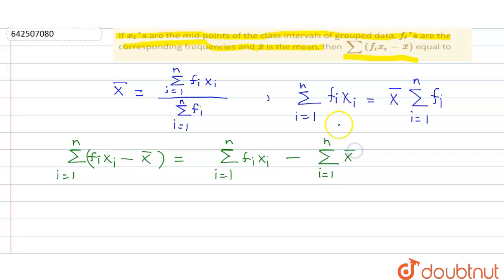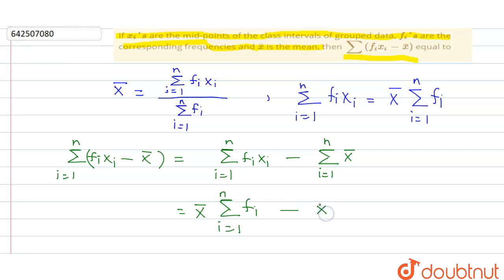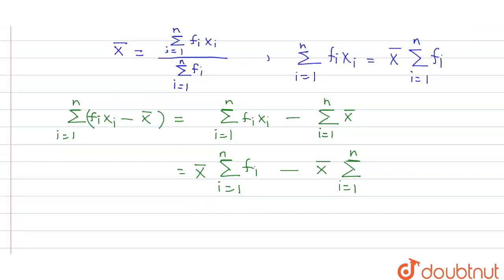We know the value of the summation of fi·xi, which equals x̄ times the summation of fi (i = 1 to n). Substituting and simplifying, x̄ times the summation of fi cancels, and the expression reduces to zero.